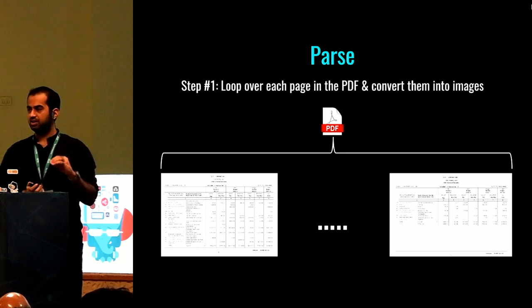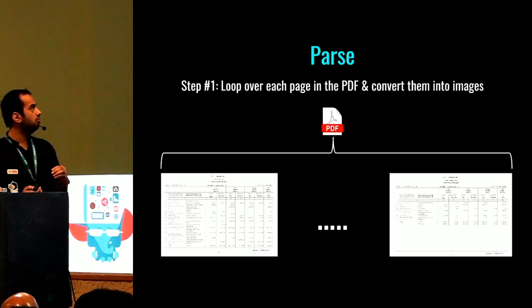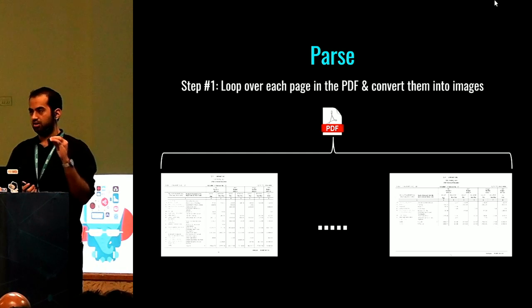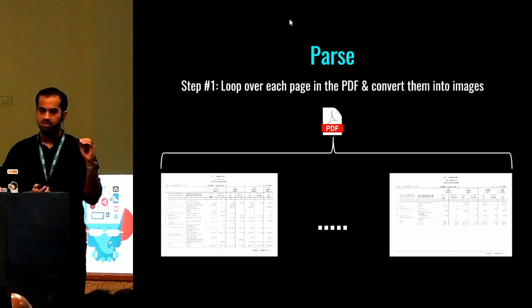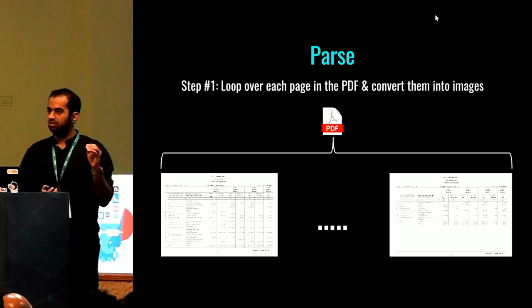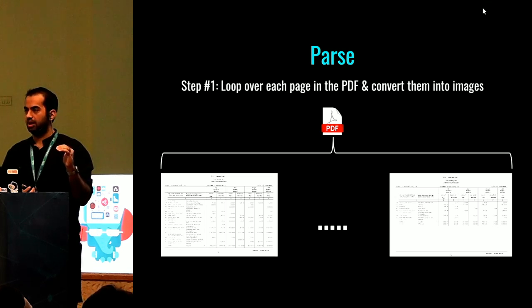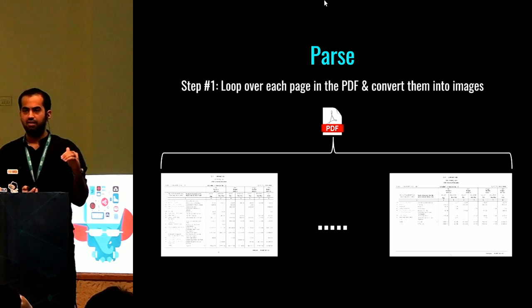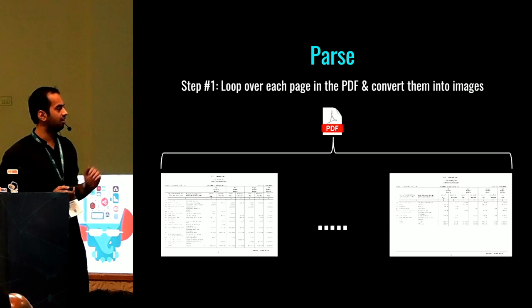Let's dig into the parse algorithm. Step one: loop over each page in the PDF and convert them into images. We convert each page into an image. Sometimes these PDFs are rotated, so we un-rotate and straighten them. Sometimes they are A3 pages that need to be converted to A4, and so on. These kinds of page layout adjustments happen at this stage.